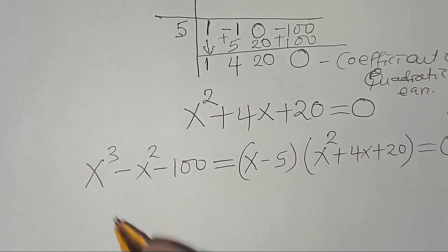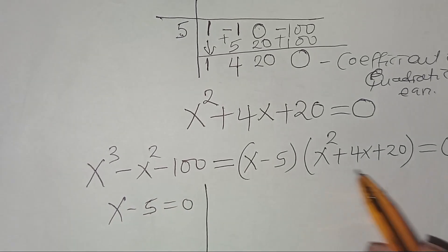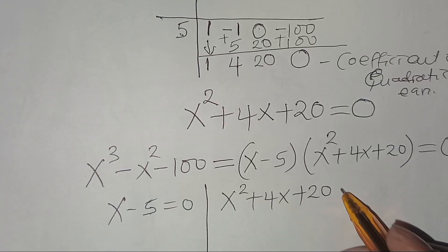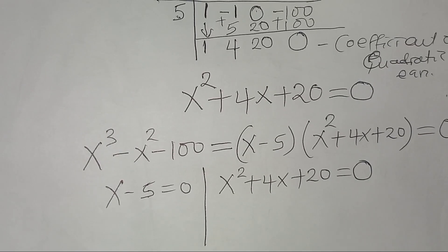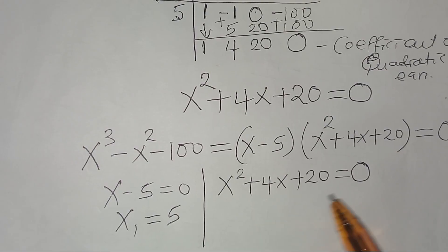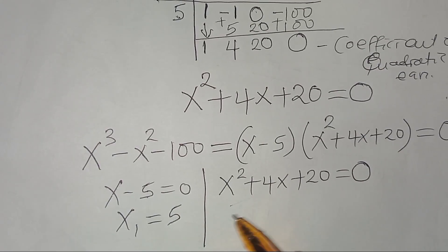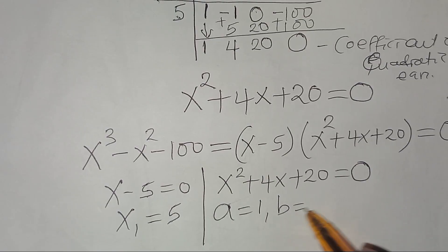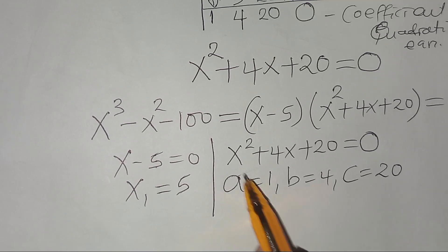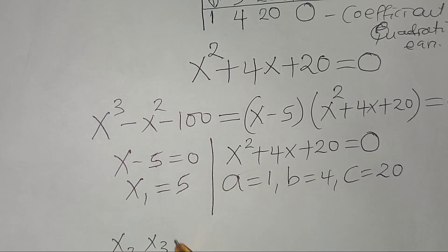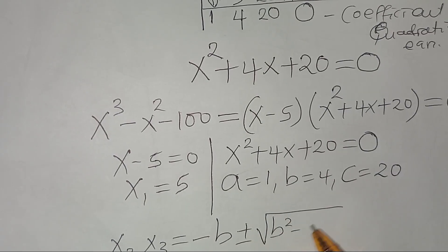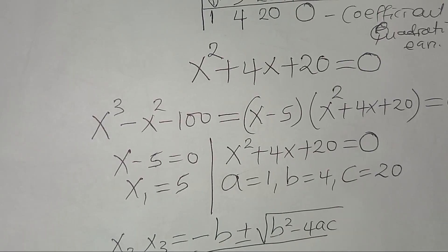We have two parts: x minus 5 equals 0, and the quadratic equation x squared plus 4x plus 20 equals 0. The first value of x is 5, which is a real solution. To solve for the other values x2 and x3, we apply the quadratic formula: negative b, plus or minus the square root of b squared minus 4ac, all divided by 2a. Here a equals 1, b equals 4, and c equals 20.